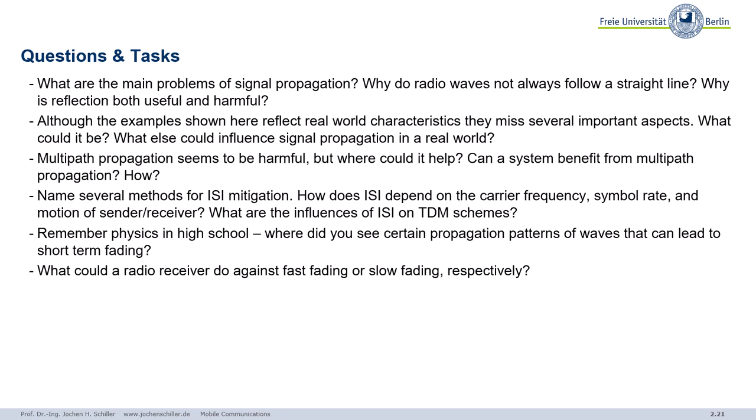So ISI mitigation. What can we do? How does this depend on symbol rate? On the motion you send on receiver moves? What can we do there? And in the next chapter, we will talk about multiplexing schemes. And then you can come back to this question. If we do this time division multiplexing and we have ISI, what are the influences? If you don't have sound knowledge in all these waves and all these things, do go back to physics, to these propagation patterns of lasers. And then you will remember exactly. So what actually can create this kind of short term fading besides reflections and some nice other effects. And what can you do against it? Fast fading, slow fading. You can look up in literature. There are several means what you can do against.